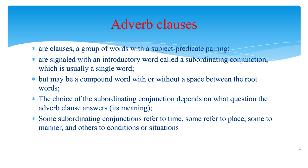This differs from a phrase, which doesn't have a subject and a verb. Each of these groups of words has a subject and a verb, but do not form a complete sentence of their own. They are dependent on an independent clause for meaning. Adverb clauses, also known as adverbial clauses, are dependent clauses that function as adverbs. Since they are dependent clauses, they must have a subordinating conjunction to connect them to the rest of the sentence. Being able to spot a subordinating conjunction will help you recognize an adverb clause.